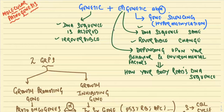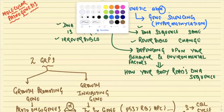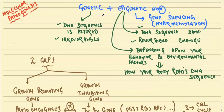Before starting the molecular pathogenesis, let me highlight certain basic concepts. In the molecular context, there are two kinds of alterations: genetic abnormality and epigenetic abnormality. In colorectal carcinoma, we are going to see both genetic as well as epigenetic alterations. Genetic abnormality means whenever the DNA sequence is altered — for example, a mutation leading to insertion, deletion, or frameshift mutation. It is irreversible — once a mutation has taken place, that abnormality will always be there.